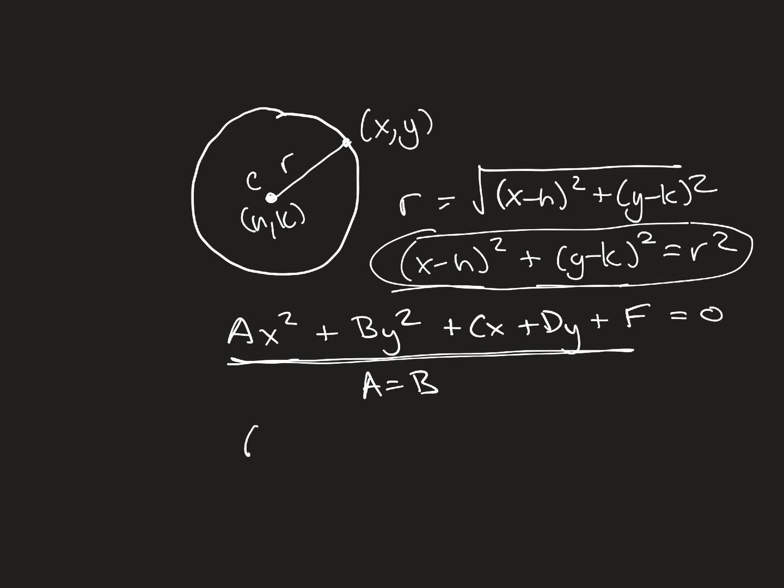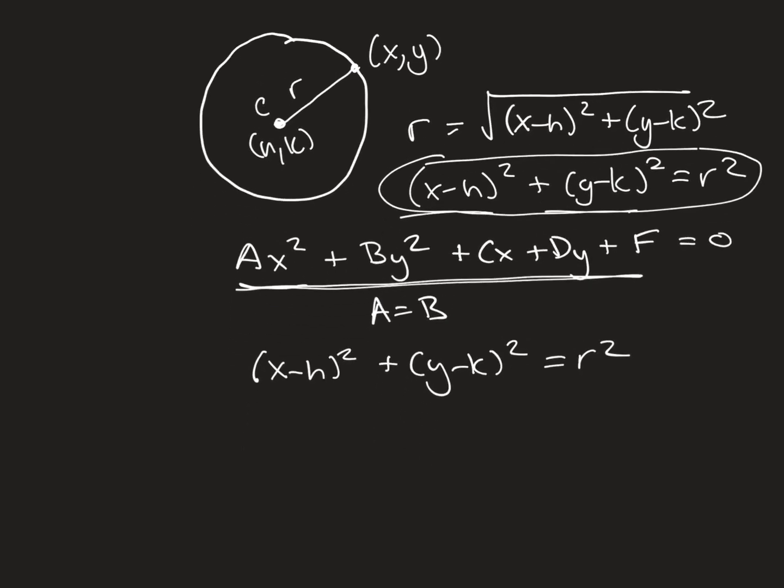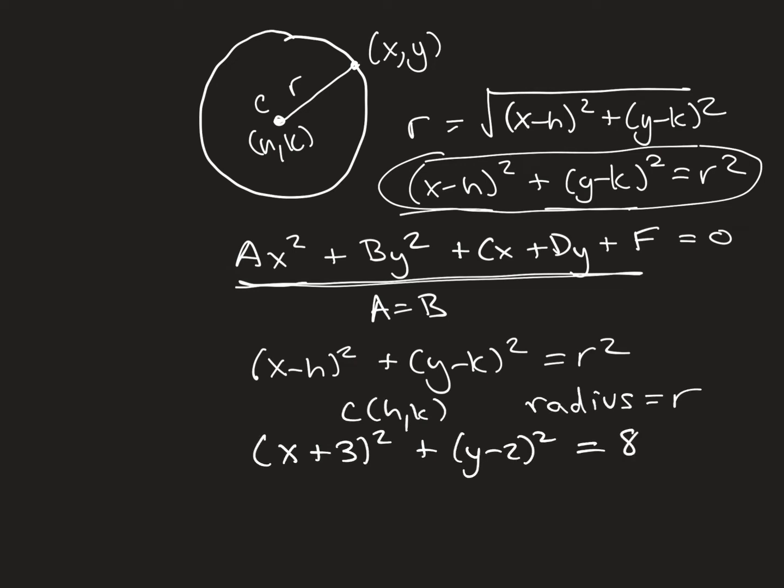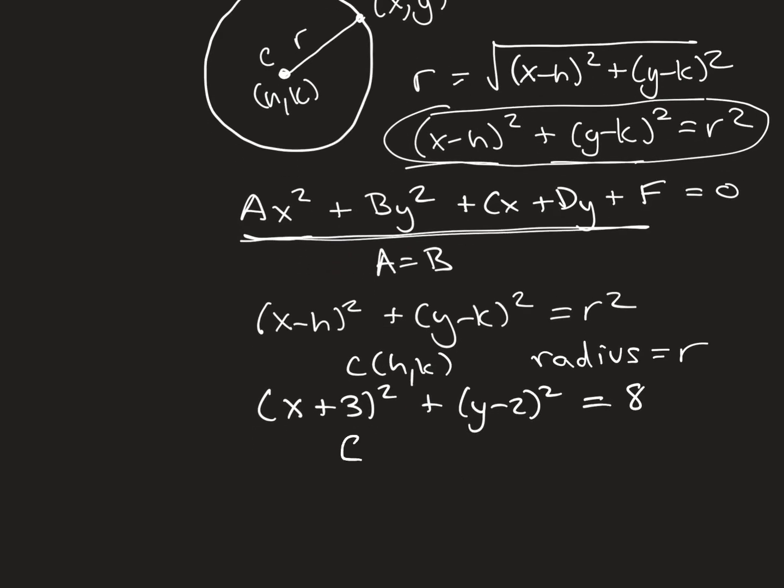So, if I complete the square, I get something that I'm going to write in this form. If it's in this form, the center's (h,k), and the radius is the square root of the right side. I'll give you an example. Say I complete the square and I get (x+3)² + (y-2)² = 8. Well, the center is then (-3, 2), and the radius is the square root of the right side, so 2√2.